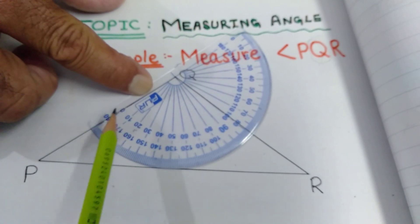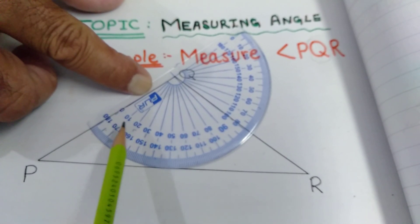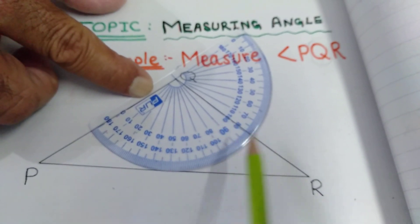Okay. We will start measuring angle 0, 10, 20, 30, 40, 50, 60, 70, 80, 90, 100 and 101.